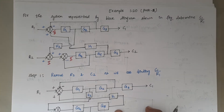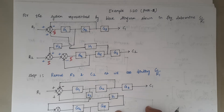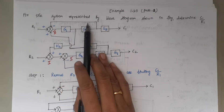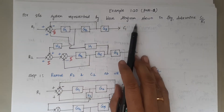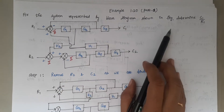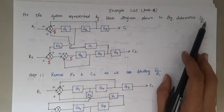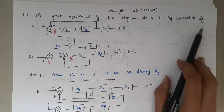Hello viewers, I am Kausalya. Today we are going to solve another block diagram reduction problem. The problem is: for the system represented by the block diagram shown in the figure, find C1 by R1.